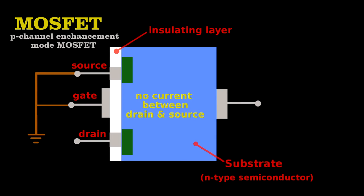When we create a voltage difference between the gate and the source, it generates a field through the insulating layer that draws the free positive charge carriers toward the gate, opening a channel that now allows current to flow.